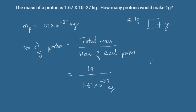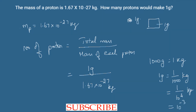I know that 1000 grams is equal to 1 kilogram. So, 1 gram is equal to 1 by 1000 of a kilogram, which is equal to 1 by 10 cube kilogram, or simply written as 10 power minus 3 kilogram.